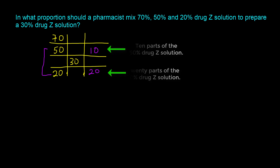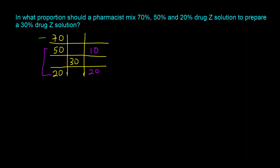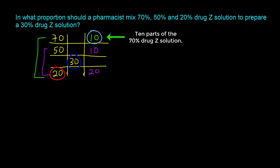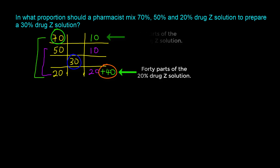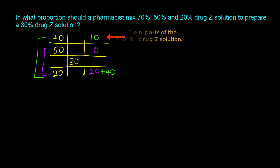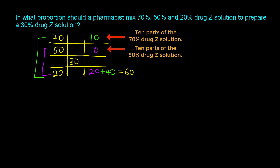You don't stop there — you repeat the process for the 70%, 20%, and desired 30%. Take 30 minus 20, which gives 10 — that's 10 parts of the 70% drag-Z solution, going to the top right. Then take 70 minus 30, which gives 40 — that's an additional 40 parts of the 20% drag-Z solution. So in total: 10 parts of the 70%, 10 parts of the 50%, and 20 plus 40 equals 60 parts of the 20% solution.